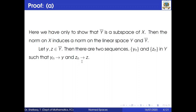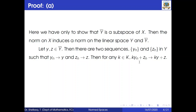Then there are two sequences, say y_n and z_n in Y, such that y_n converges to y and z_n converges to z. This is a known result we already discussed in the part on metric spaces. Since y_n and z_n are sequences in Y, then for any k belonging to K, k·y_n + z_n converges to k·y + z, due to the continuity of vector addition and scalar multiplication.